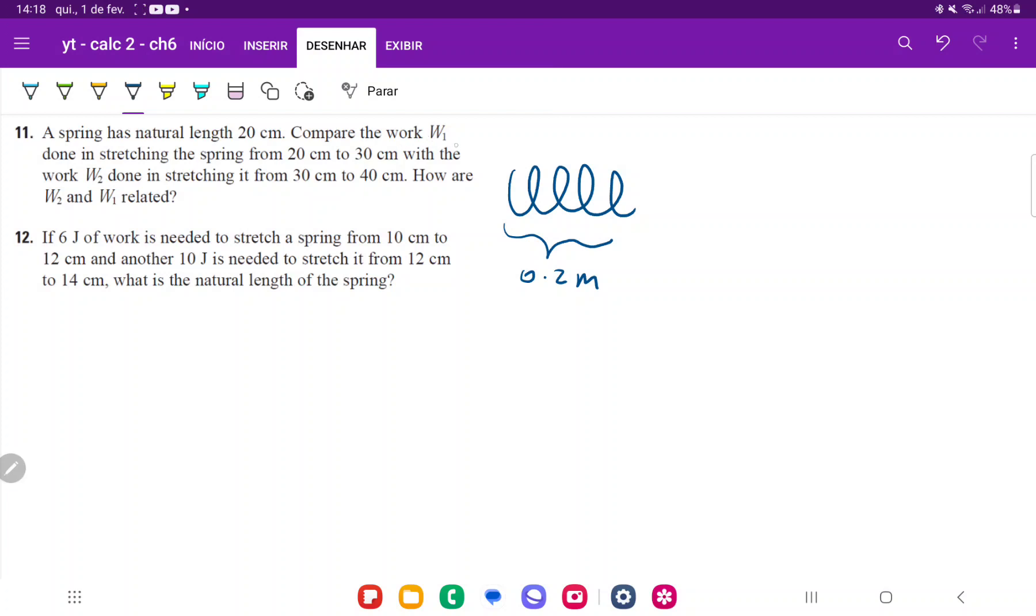We want to compare the work W1 done in stretching it from 20 centimeters (its natural length) to 30 centimeters. The first work we're doing is stretching it an additional 10 centimeters, which is an additional 0.1 meters.